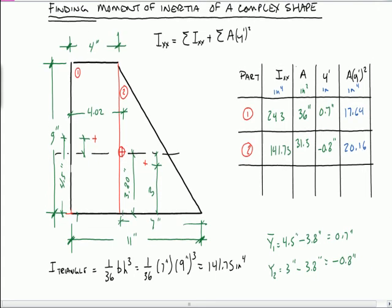At this point, we have all the parts that we need. We need to sum up the i x-axes. And we need to sum up the products of a y squared. So when we sum up this column here, we get 243 plus 141.75, and that gives us 384.75 inches to the 4th. And we sum up the final column, 17.64 plus 20.16, and we get 37.8 inches to the 4th.